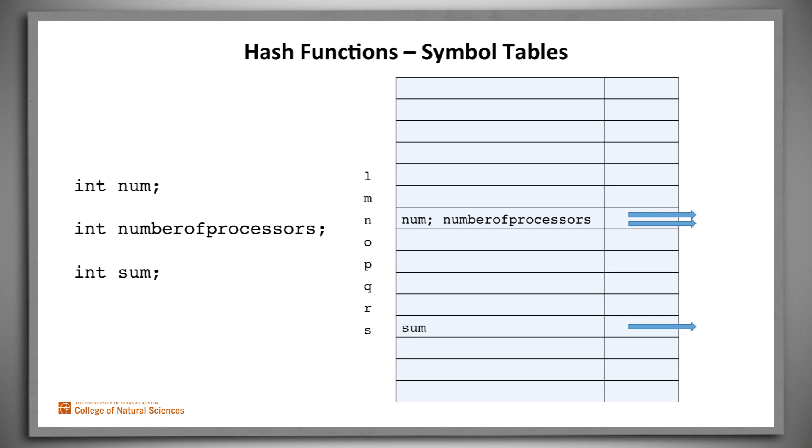So as an alternative, we could, for example, use just 26 rows, one for each letter. Then we dump the identifiers into a slot, say, based on their first letter. We'll stop wasting space. But we'll have to deal with collisions, cases where several identifiers land in the same box, as happens here in the end box.